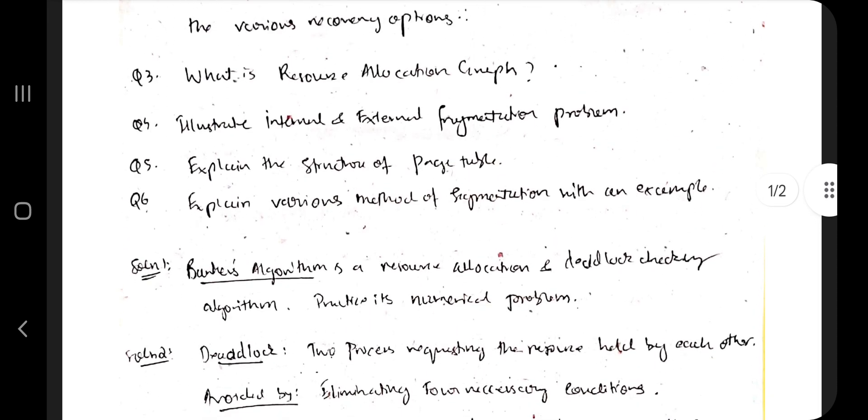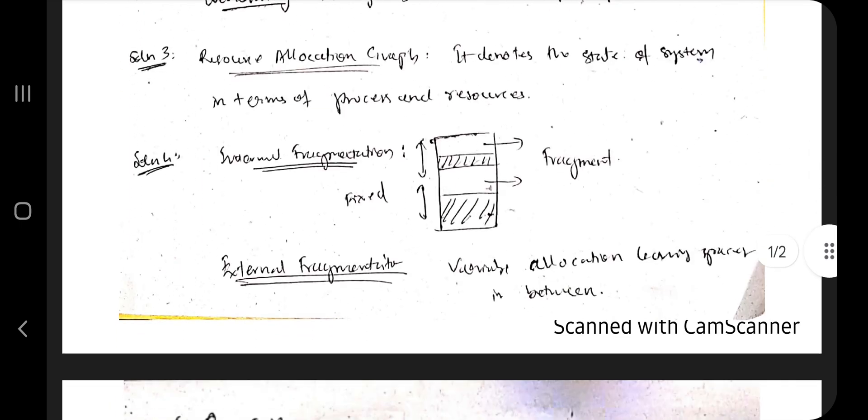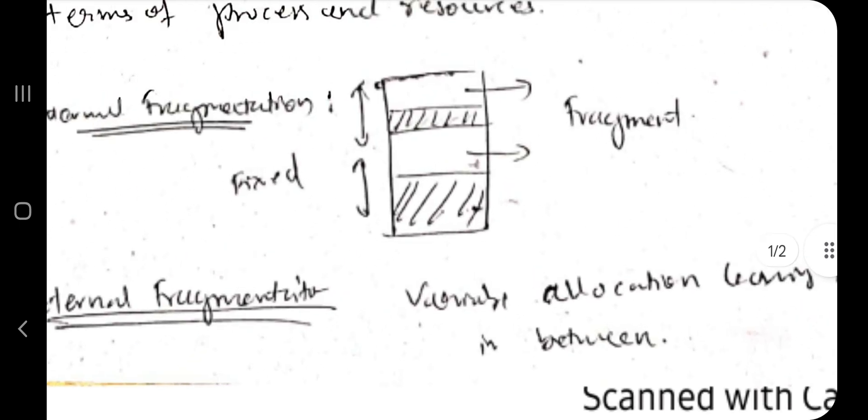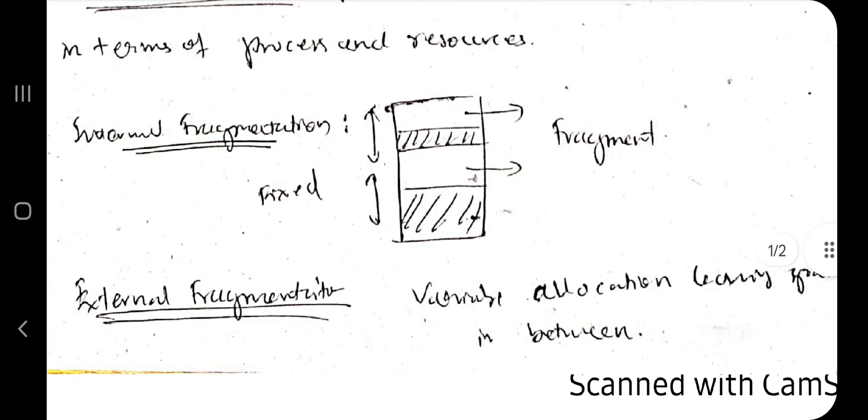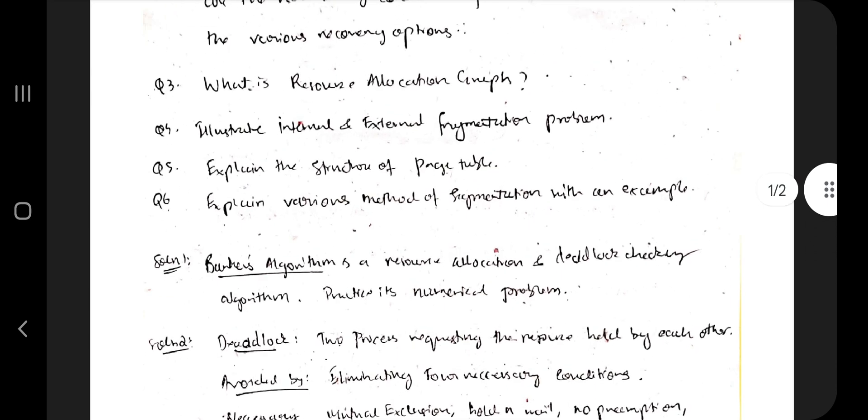What is internal and external fragmentation? Remember, fragmentation is nothing but in between the memory there will be free spaces that is known as fragment. There are two types: internal, external fragmentation. If you want more details, you can watch the theory part video.